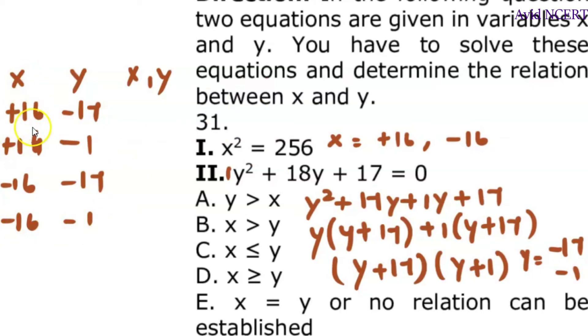Here x is positive 16 and y is minus 17, which means x is greater than y. And here again x is greater than y. Here x is again greater than y, which is negative 16 is greater than negative 17. And here y is greater than x.